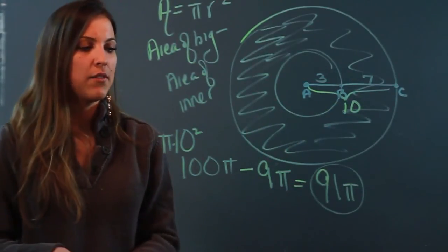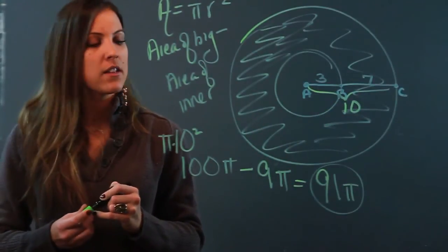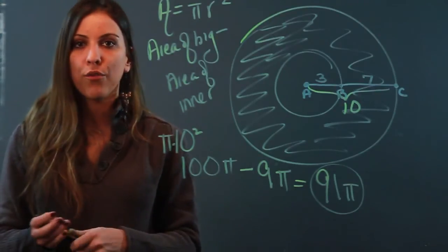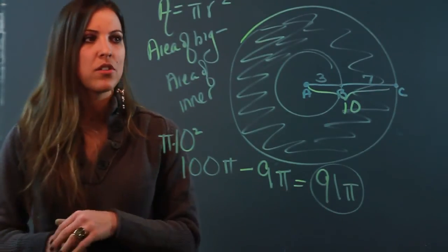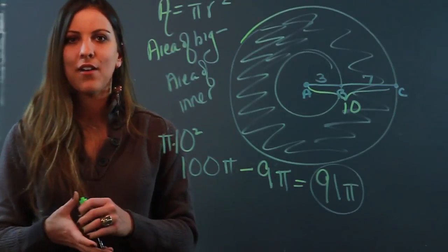And if I wanted to, if my teacher said leave it in terms of pi, that's the answer. If my teacher said use 3.14 for pi, then I'd have to substitute that and multiply, and you'll get somewhere around 300. So, that is how you find the area of a donut shape.